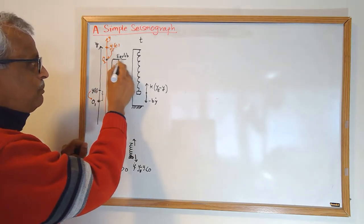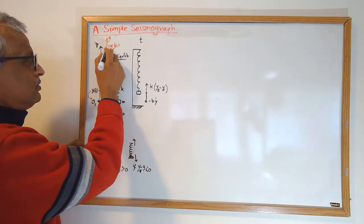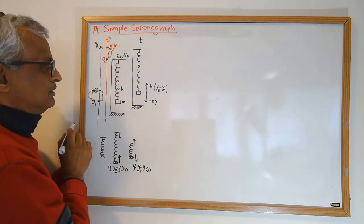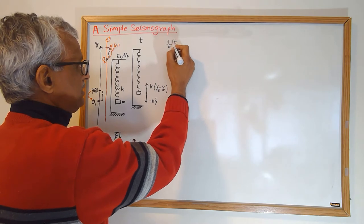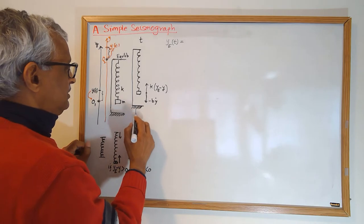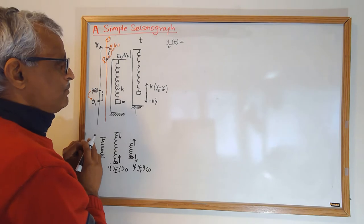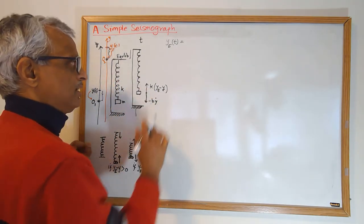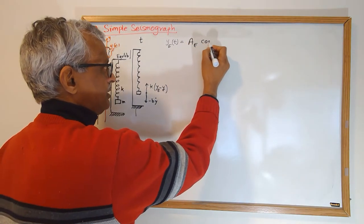For the top of the spring we use the origin here, and this distance is y_e. What's given to us is that y_e(t) is the displacement of the support, and given that the earth is moving harmonically, y_e is equal to some amplitude constant times cosine(ωt).